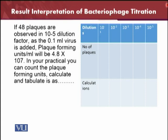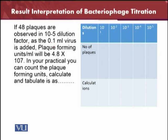For example, if 48 plaques are observed at a 10 raised to the power 5 dilution factor, and 0.1 ml of the virus was added as we saw in the last slide, then the plaque forming units per ml will be 4.8 × 10 raised to the power 7. From your own laboratory results, you can see how many plaques you have counted. The table has three columns: the dilution (10 raised to power 1 through 5), the number of plaques observed, and the PFU/ml calculation using the same formula.